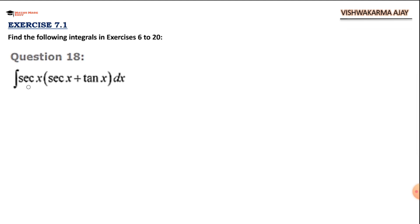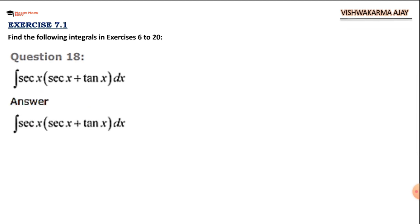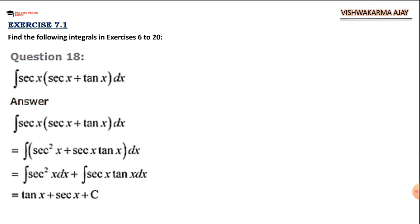Next: integral of sec x (sec x + tan x) dx. We multiply sec x inside the bracket to get sec²x + sec x tan x. Applying the integral formulas: the integral of sec²x is tan x, and the integral of sec x tan x is sec x. So the answer is tan x + sec x + c. A list of formulas will be provided at the end of this video — you can screenshot or write them down.